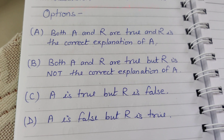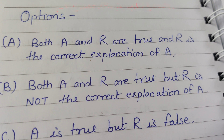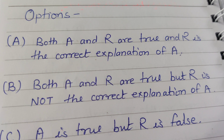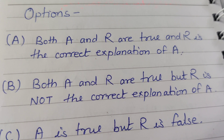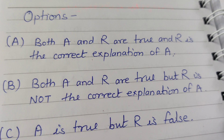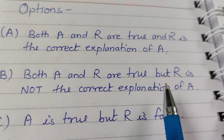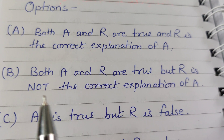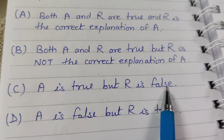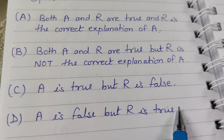Option A: Both assertion and reason are true, and reason is the correct explanation of assertion. Option B: Both assertion and reason are true, but reason is not the correct explanation. Option C: Assertion is true but reason is false. Option D: Assertion is false but reason is true.